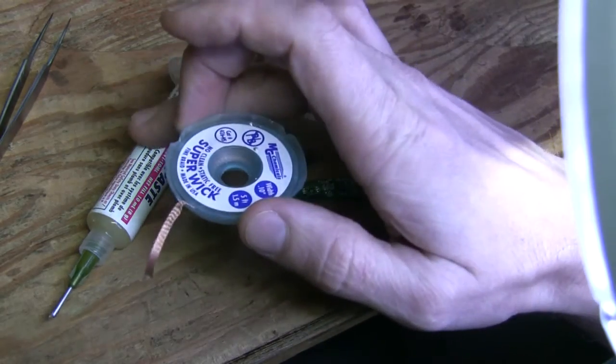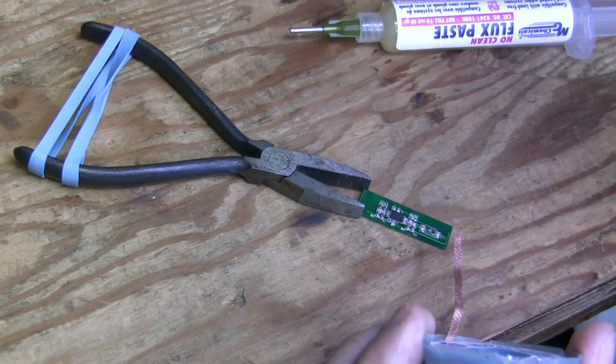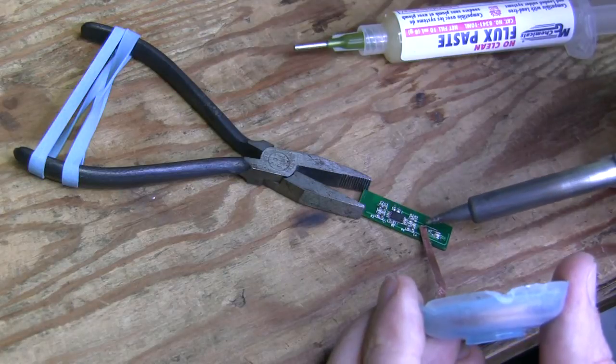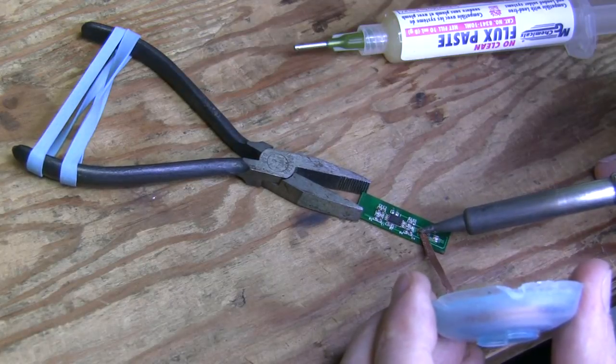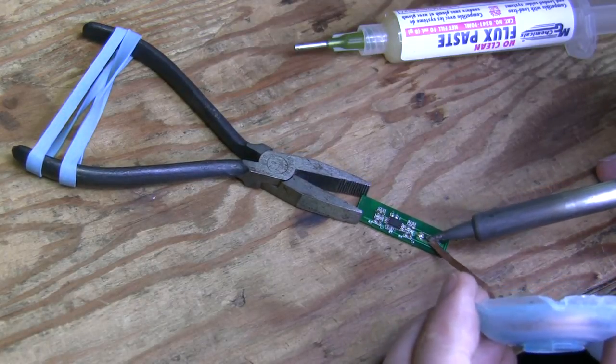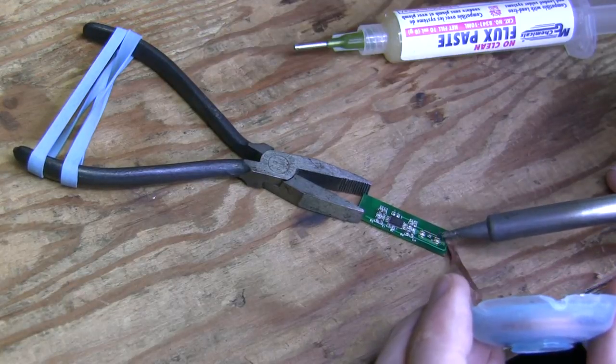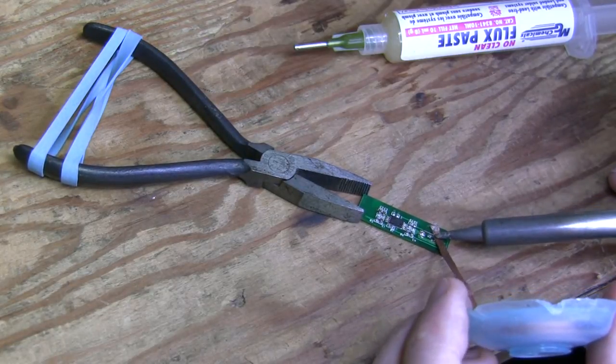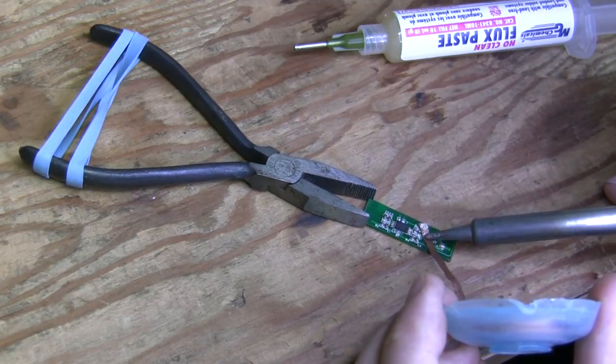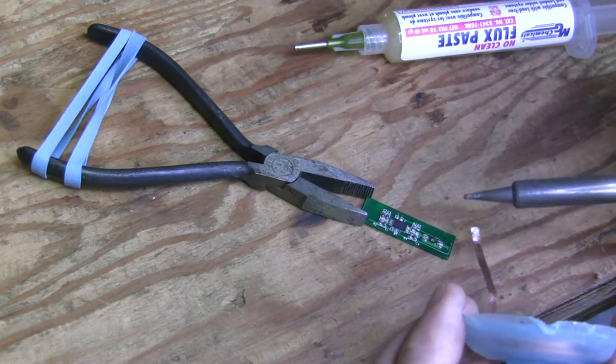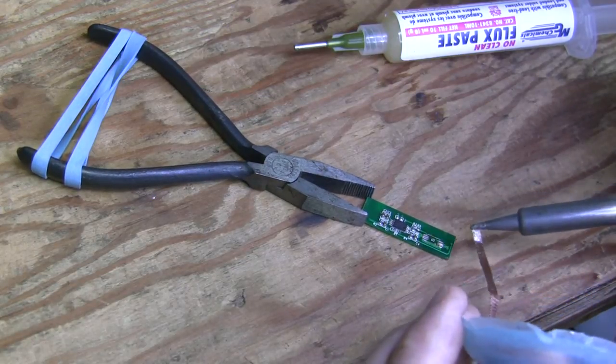Now let's use this flux and this wick to remove the excess solder. Using a little helping hand here to keep the board in place because it's tiny. Even this thing is not heavy enough. But I think I managed to remove excess solder. I think it's clean enough for the new chip.